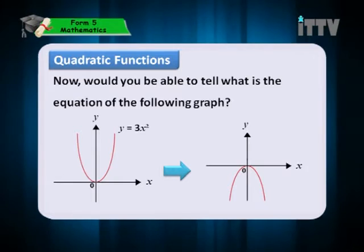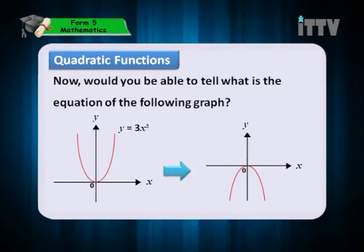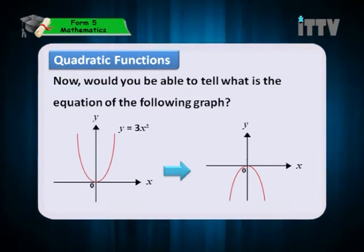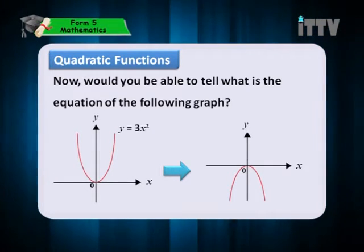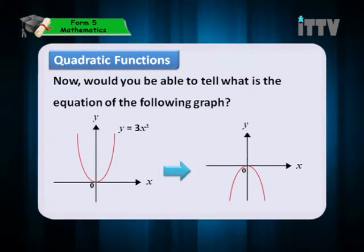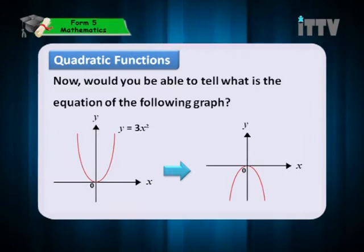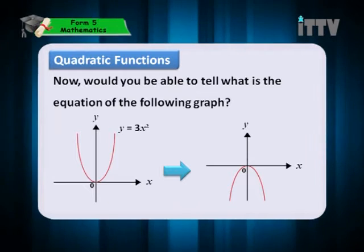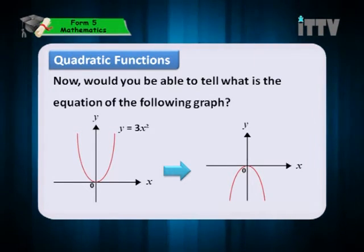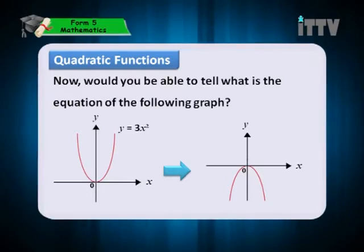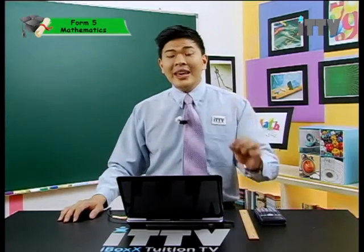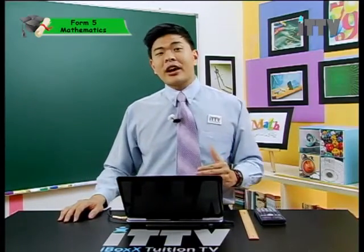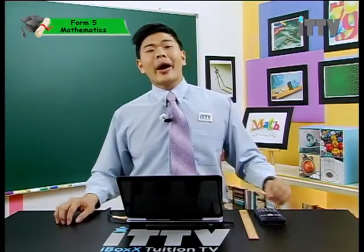Would you be able to tell what is the equation of the following graph? We have seen the graph of y equals to x-square. Now take a look at this graph right here. If the first graph is y equals to 3x-square, then what happens if we just invert the graph? It means the coefficient takes a negative value, so the second graph would have an equation of y equals to negative 3x-square.